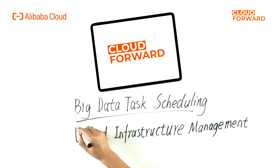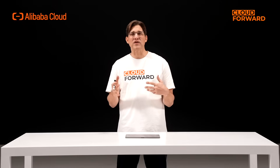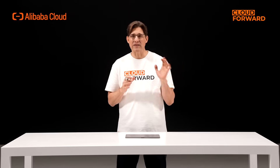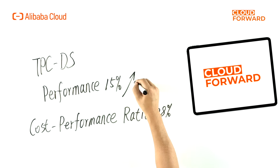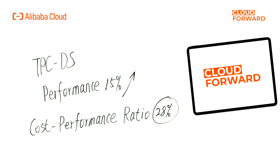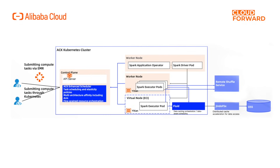The ACK Cloud Native AI Suite provides big data task scheduling capabilities, offering efficient sample data processing for AI training. It supports unified infrastructure management, centralized cluster resource scheduling, and compatibility with ETN ARM architecture CPU clusters. In TPC-DS standard tests, utilizing the big data task scheduling feature resulted in a 15% performance improvement and a 28% cost performance ratio optimization compared to scenarios without its use. To optimize storage and compute separation architecture, ACK supports the integration of fluid cache acceleration along with remote shuffle service, achieving maximum elasticity capabilities.